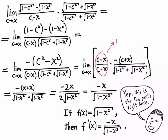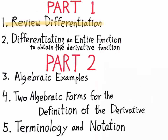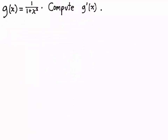So I've shown one algebraic example. Let's use a second function: g(x) equals 1 over 1 plus x squared. I'll compute g prime of x by setting up the difference quotient the same way — I'll draw a sketch and write a difference quotient for the slope between two points.